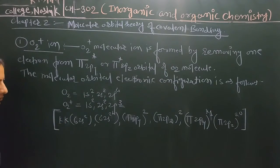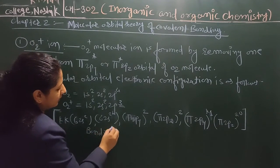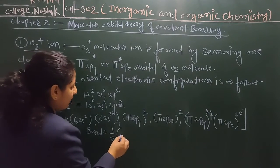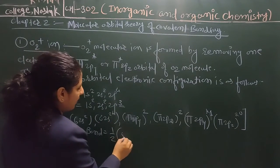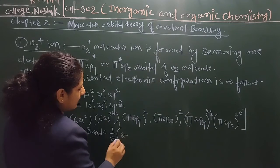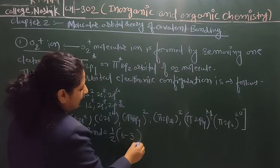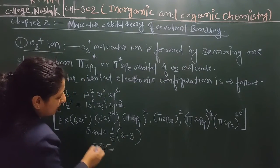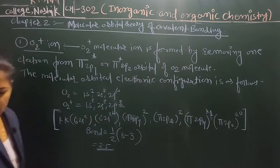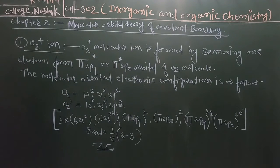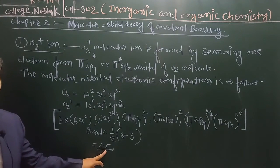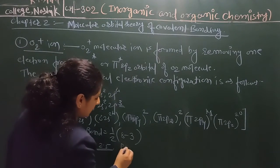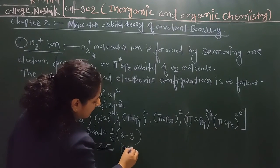We know that bond order is equal to half into the number of bonding minus the number of anti-bonding orbitals. Here the number of bonding orbitals is 8 and anti-bonding gives a bond order of 2.5. A bond order of 2.5 means there is an unpaired electron, so O2 plus ion is paramagnetic.